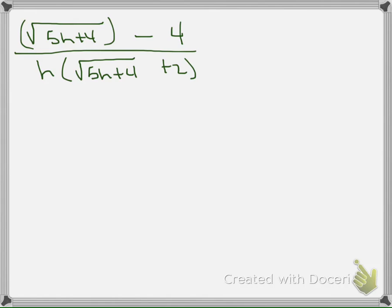So, and this term right here to get the square in there. All right. So when I square that radical that's going to give me, well, that'll be 5h plus 4 minus 4. And then that's all over h times the square root of 5h plus 4 plus 2 outside the radical.